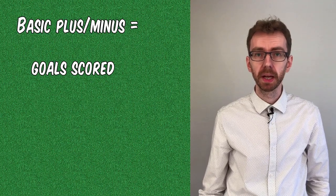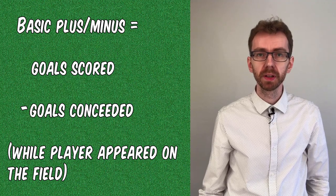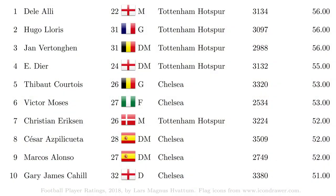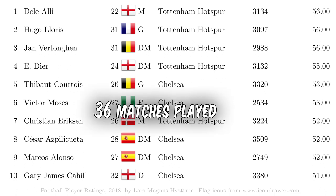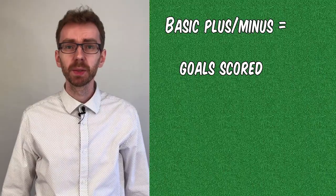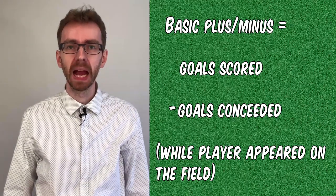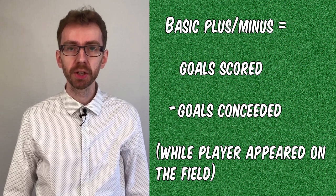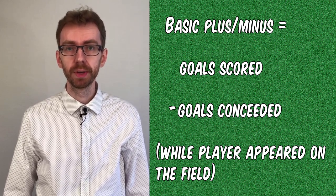When presenting the basic plus-minus statistic, one is usually doing the calculations for one season at a time. For example, if we do this for the 2016-2017 season of the English Premier League, these are the 10 players with the highest plus-minus ratings. Take Thibaut Courtois to illustrate the ratings. He played 36 full matches for Chelsea in the 2016-2017 season. Over those matches, Chelsea scored 81 goals and conceded 28. 81 minus 28 is 53, which is then the plus-minus rating for Courtois. This way of doing the calculations may be a bit unfair though, as some players have simply appeared in fewer matches and therefore have had fewer chances to increase their goal differential.